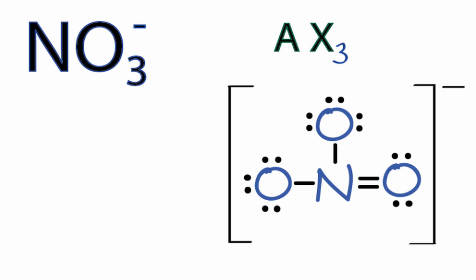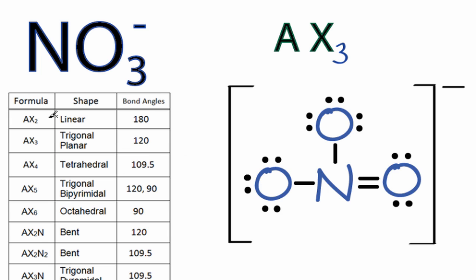We could have memorized that AX3 is trigonal planar, but we can also, if we're allowed to, look it up on a table. So as we go down our table, we have AX2, and right there is AX3, which is trigonal planar, and has bond angles of 120 degrees.